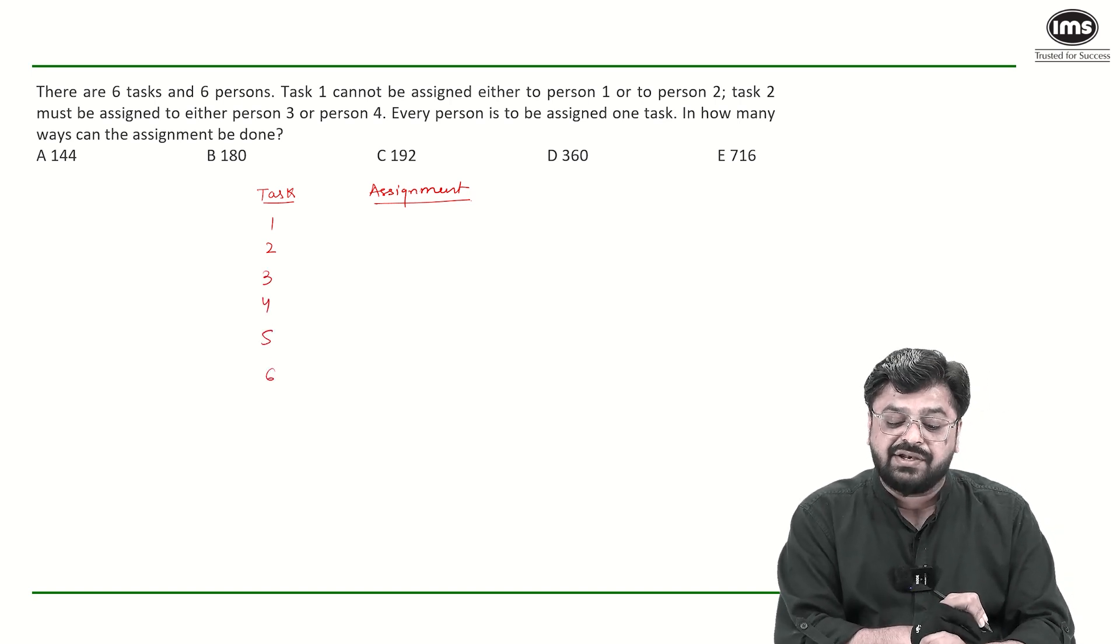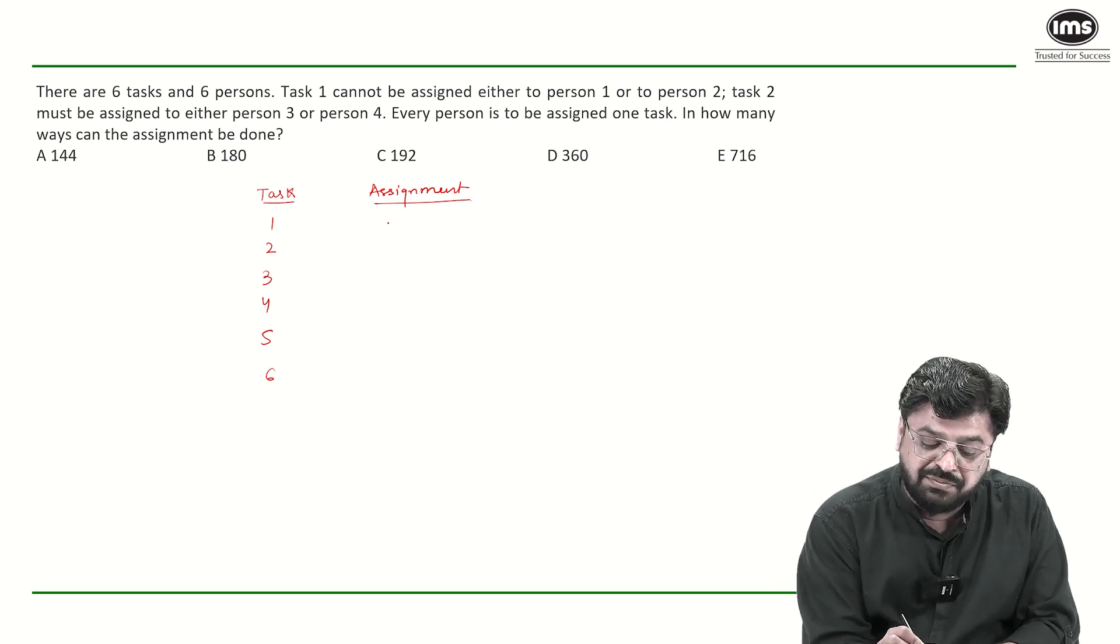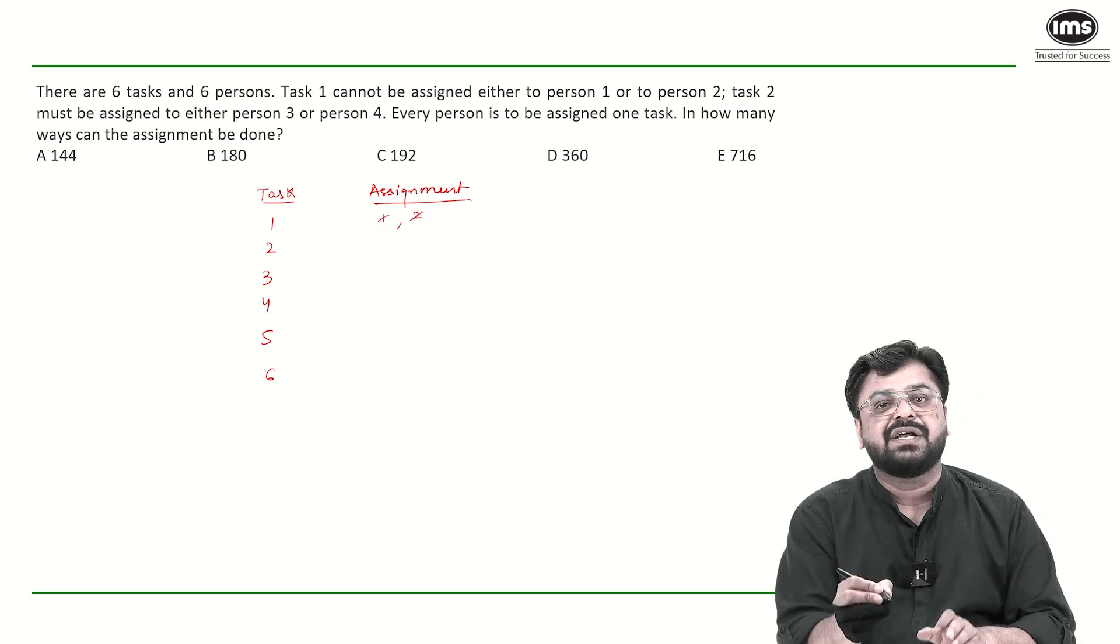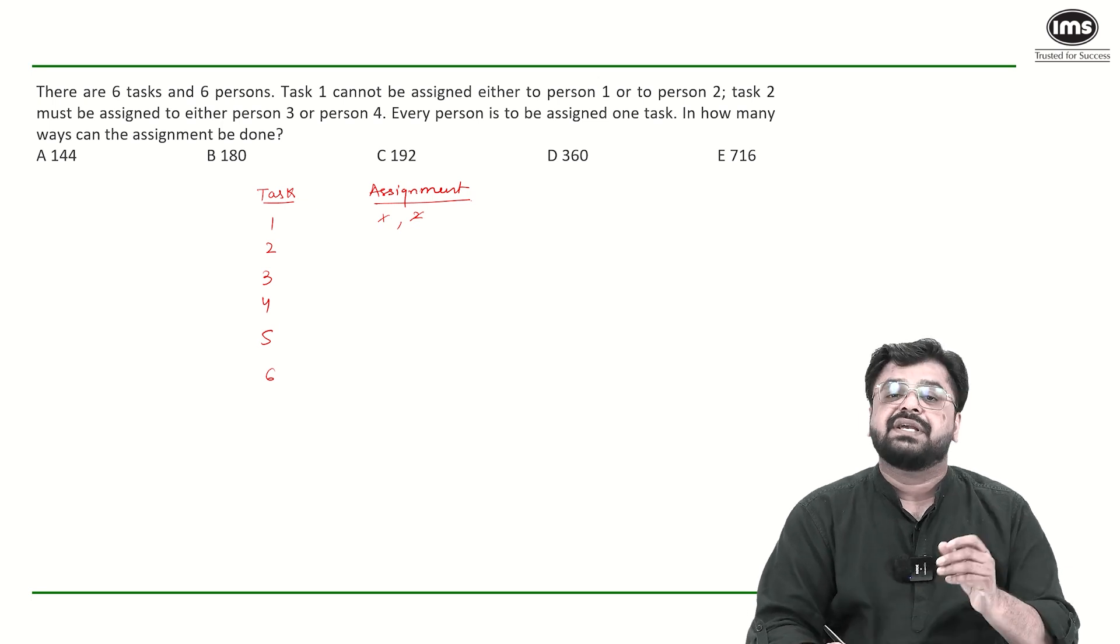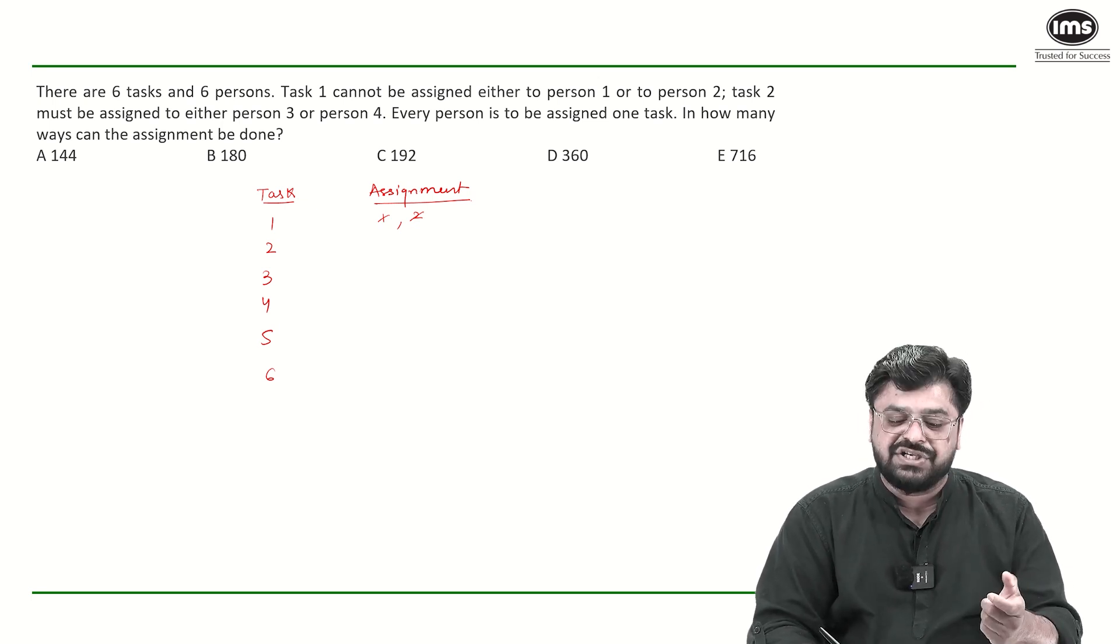Task 1 cannot be assigned to person 1 or 2, which means I cannot assign this to person 1 or 2. Does that mean I can assign it to person 3, 4, 5, 6? Yes, I can, but there is one condition.